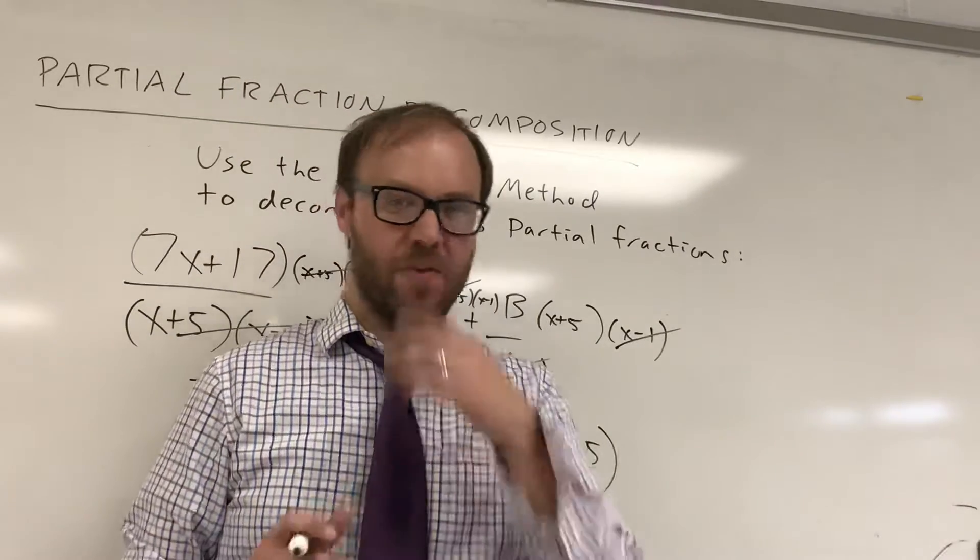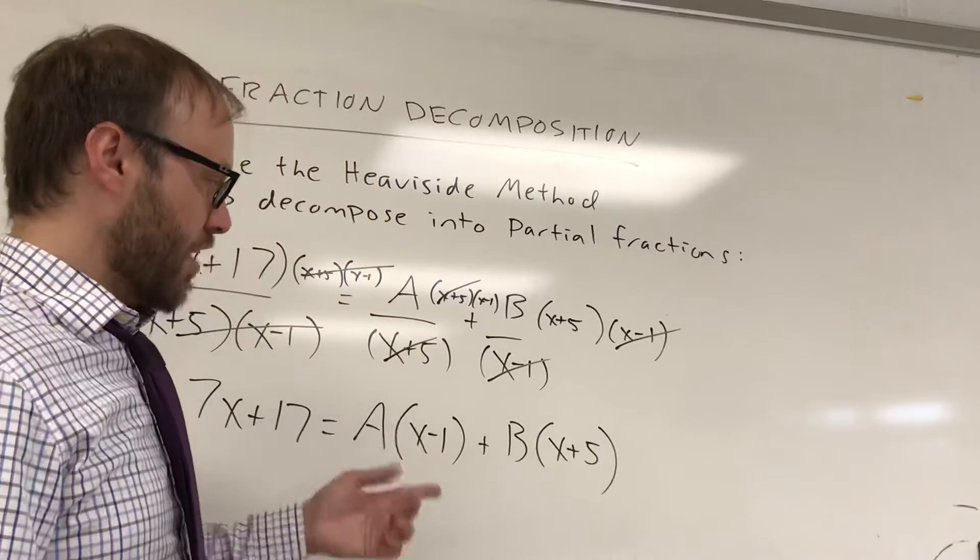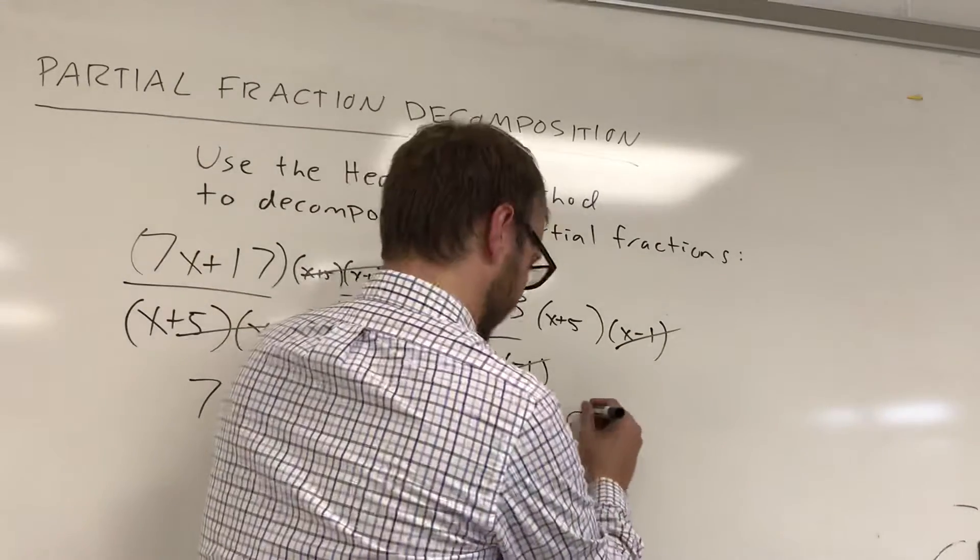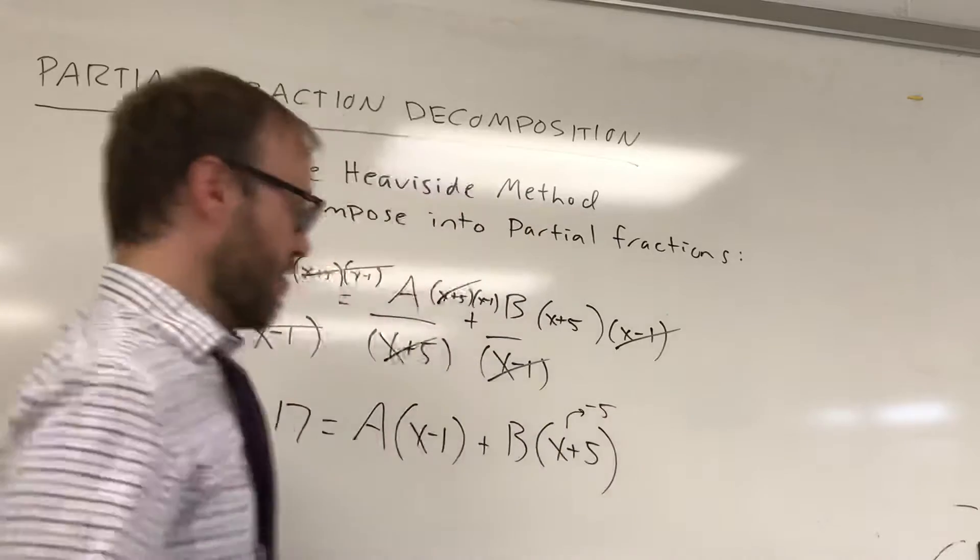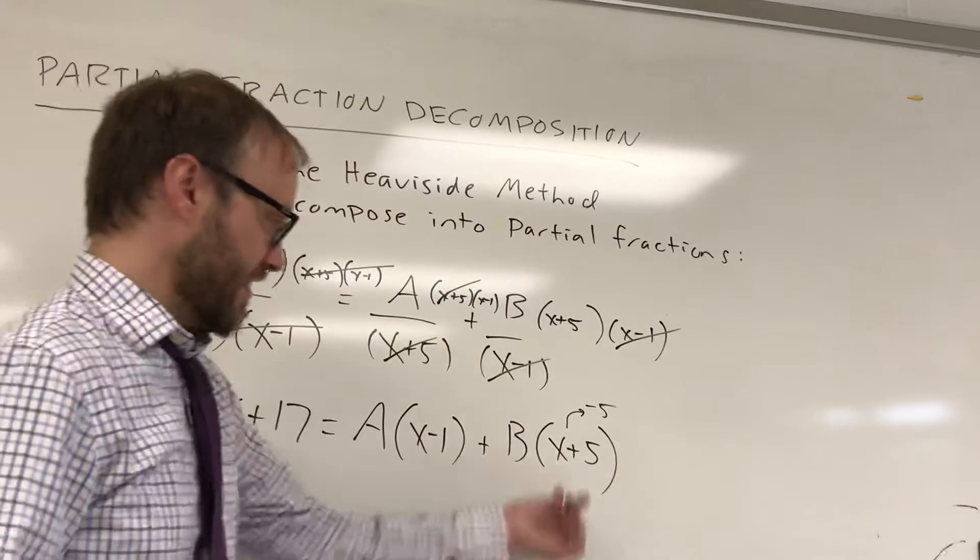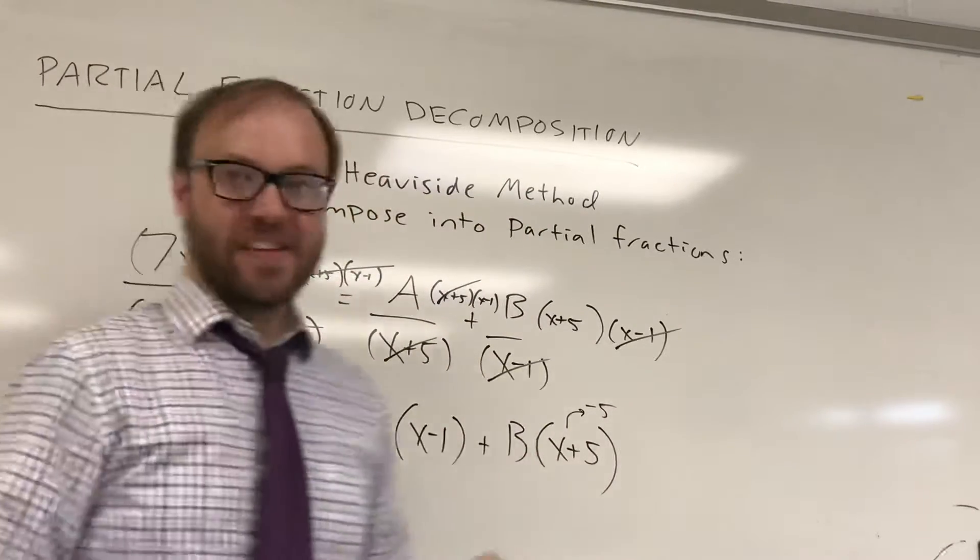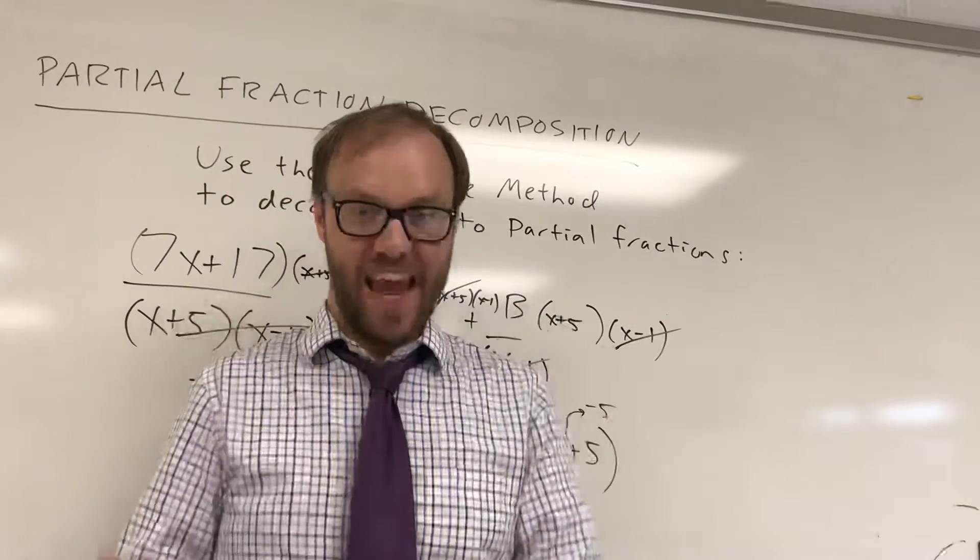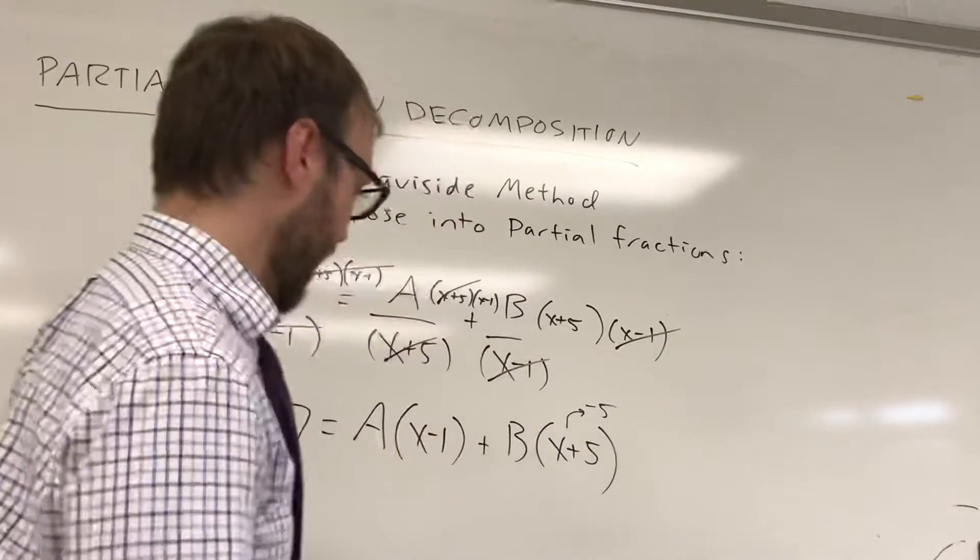And so what Heaviside said was, well, okay, why don't I put in a negative 5 for x? And if I put in a negative 5 for x here, this is going to be 0B. And it's going to leave me an equation that just has A. And then I'm going to be able to solve for it really quickly.